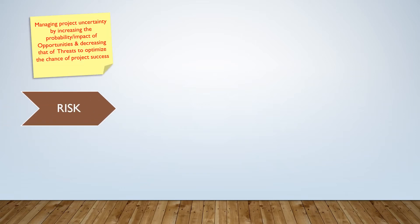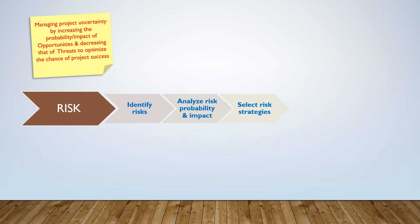Risk management is about managing project uncertainty by increasing the probability and impact of opportunities and decreasing that of threats, to optimize the chance of project success. To manage risk, the project manager must identify risks, analyze probability and impact, select risk strategies, implement risk strategies, and then monitor and control risk on the project.